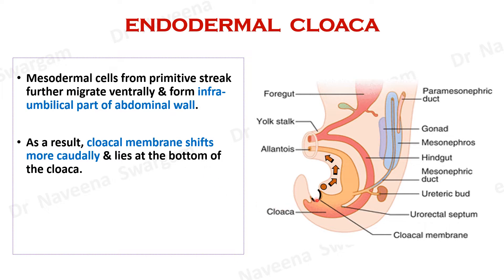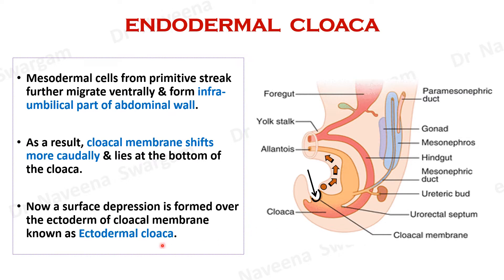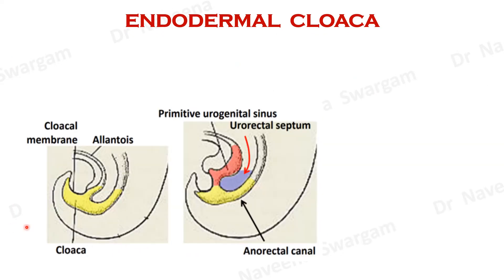Meanwhile, a surface depression is formed over the ectoderm of the cloacal membrane known as ectodermal cloaca. Here is the endodermal cloaca with its allantoic diverticulum. Here is the cloacal membrane with its surface depression, ectodermal cloaca. At this stage, a coronally oriented mesodermal septum is formed between the hindgut and allantoic diverticulum known as urorectal septum.